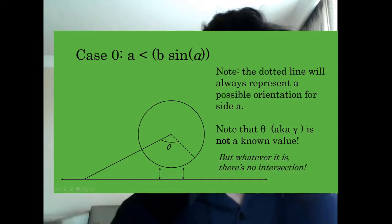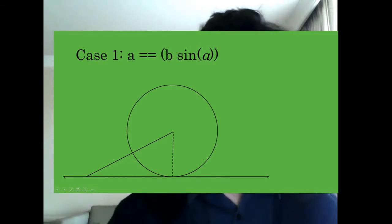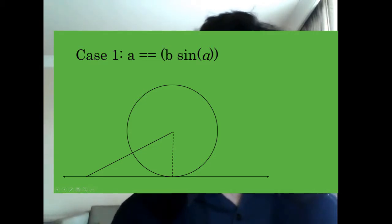Now, if A is equal to h — so those two values are equal, meaning that the side opposite the given angle and the length of the altitude are actually equal in length — then there is one and only one triangle possible, and it's a right triangle. In fact, this implies that the side opposite our known angle is literally the altitude, because there's no other way that it can be.